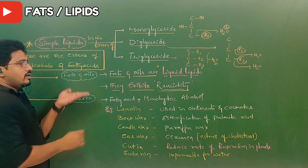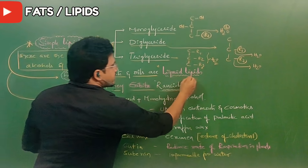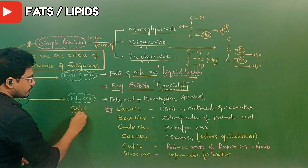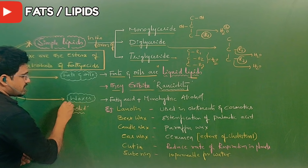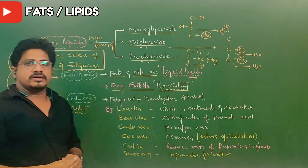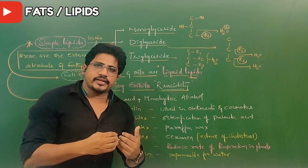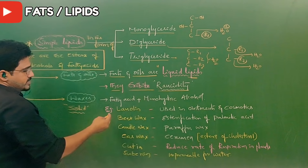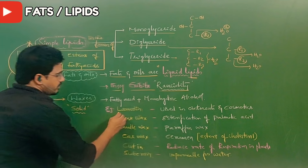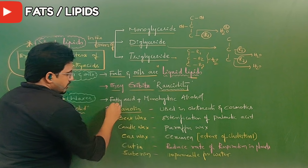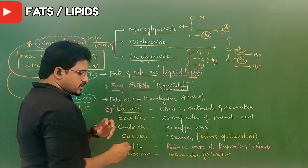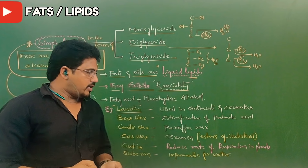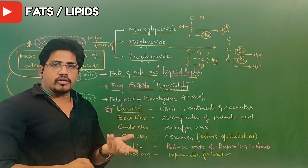Another category of simple lipids is waxes. Waxes are solid in nature. They are also a kind of fat formed by esterification of some lipids. For example, lanolin is generally used in cosmetics and is derived from cholesterol and lanosterol components.